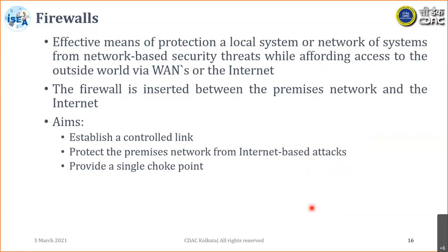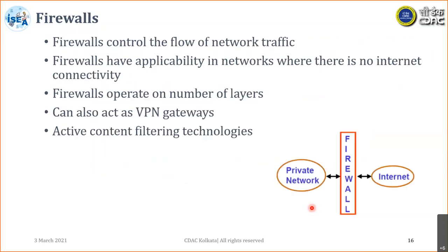In layman's terms, a firewall can be represented as a gatekeeper of your office premises — like a security guard at your office who allows persons he has been instructed to allow. Wanted persons are allowed inside; unwanted persons are stopped at the gate. Similarly, unwanted network connections are stopped at the network perimeter. Firewalls control the flow of network traffic, operate on multiple layers, and can also act as a VPN gateway.